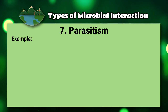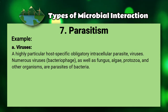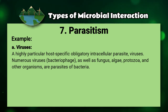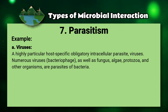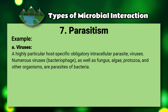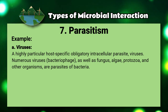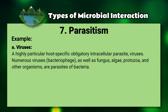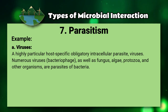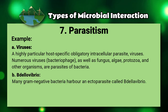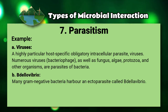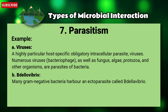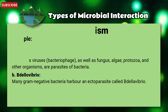Examples of parasitism: number one, viruses — highly specific obligatory intracellular parasites. Numerous viruses, bacteriophages, as well as fungi, algae, protozoa and other organisms are parasites of bacteria. Number two, Bdellovibrio — many gram-negative bacteria harbor an ectobacterium called Bdellovibrio.